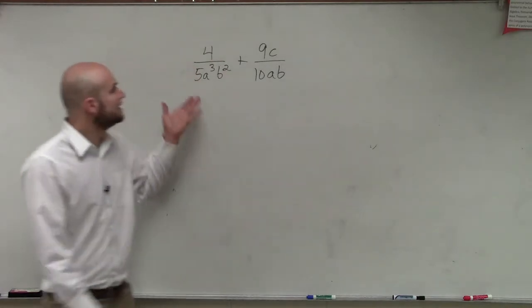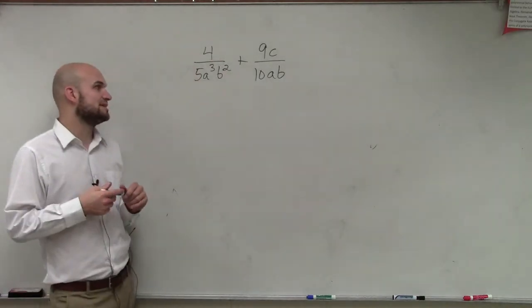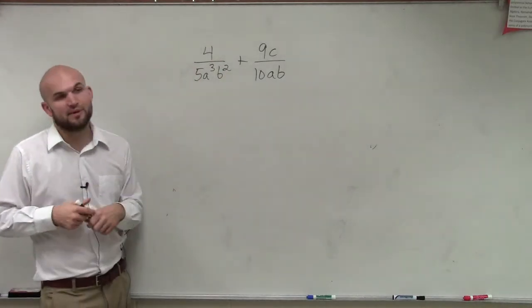So, in this case, what I have, ladies and gentlemen, is 4 divided by a cubed b squared, plus 9c divided by 10 times a times b.